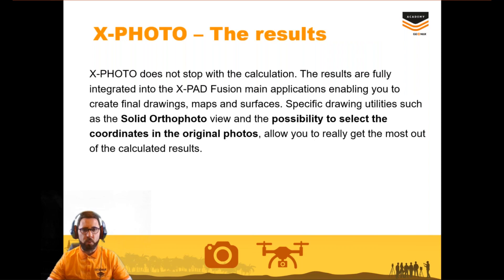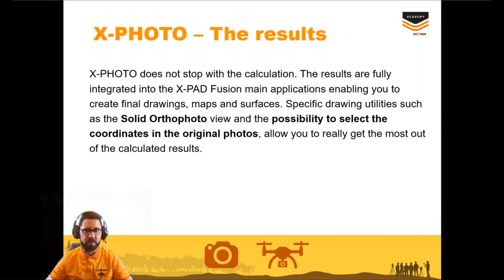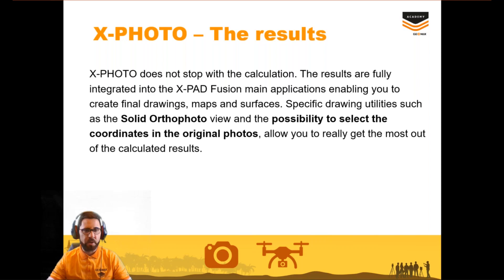We have the possibility to create solid orthophotos — special orthophotos with 3D elements. Classical orthophotos are only 2D, but in solid orthophotos we can use the 3D values of the processed data, meaning that if you draw something directly on the orthophotos the result will be in 3D. We also have the stereo drawing tool, which allows using the photos directly from the calculation for drawing — like a stereo plotter — directly from the main software interface.